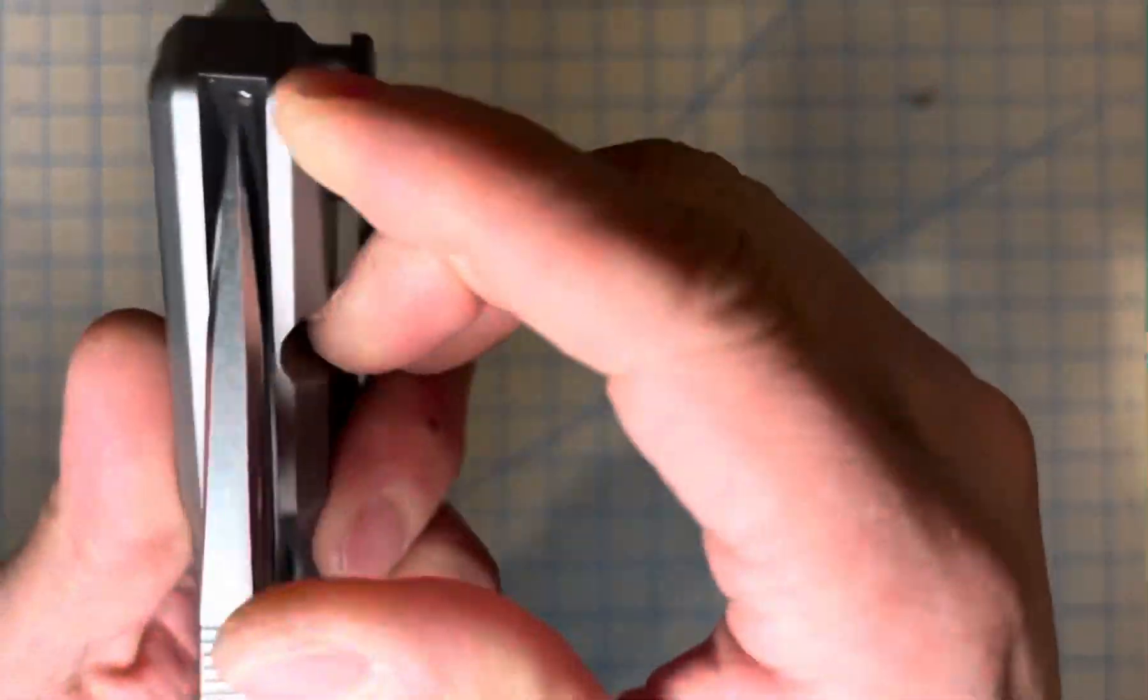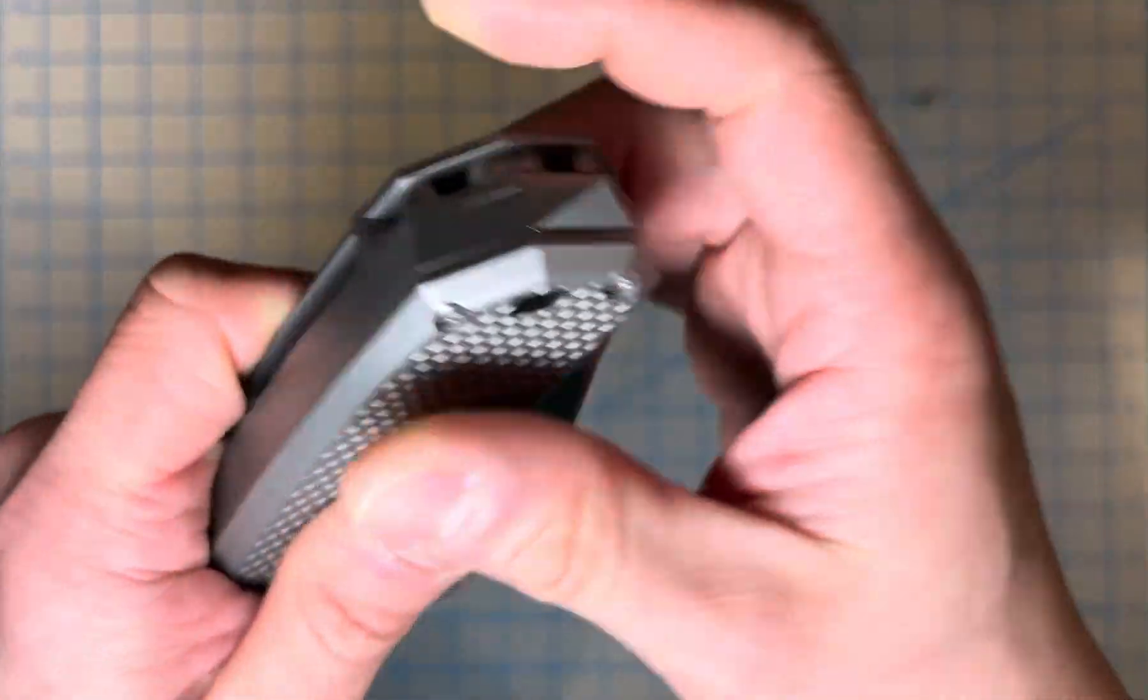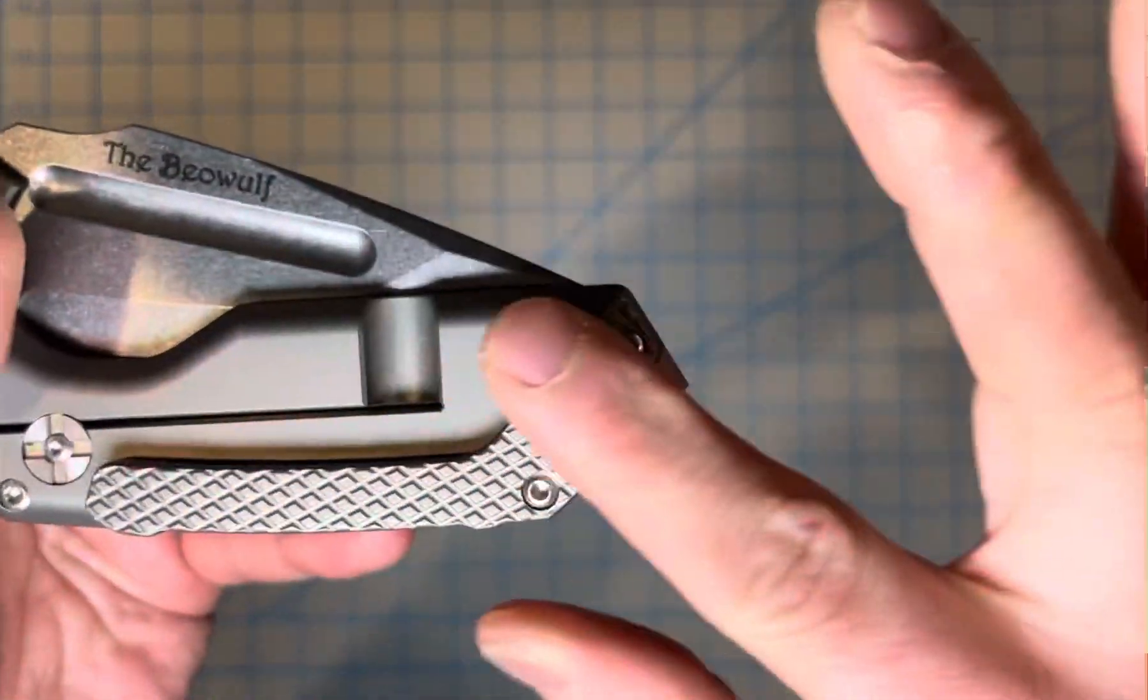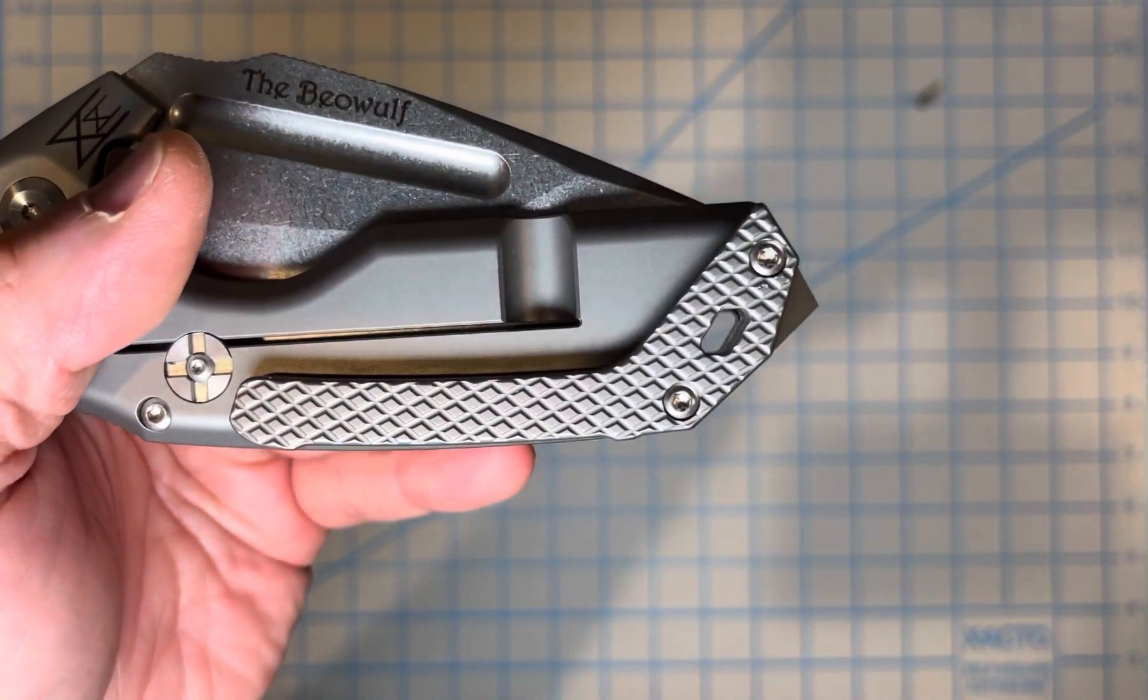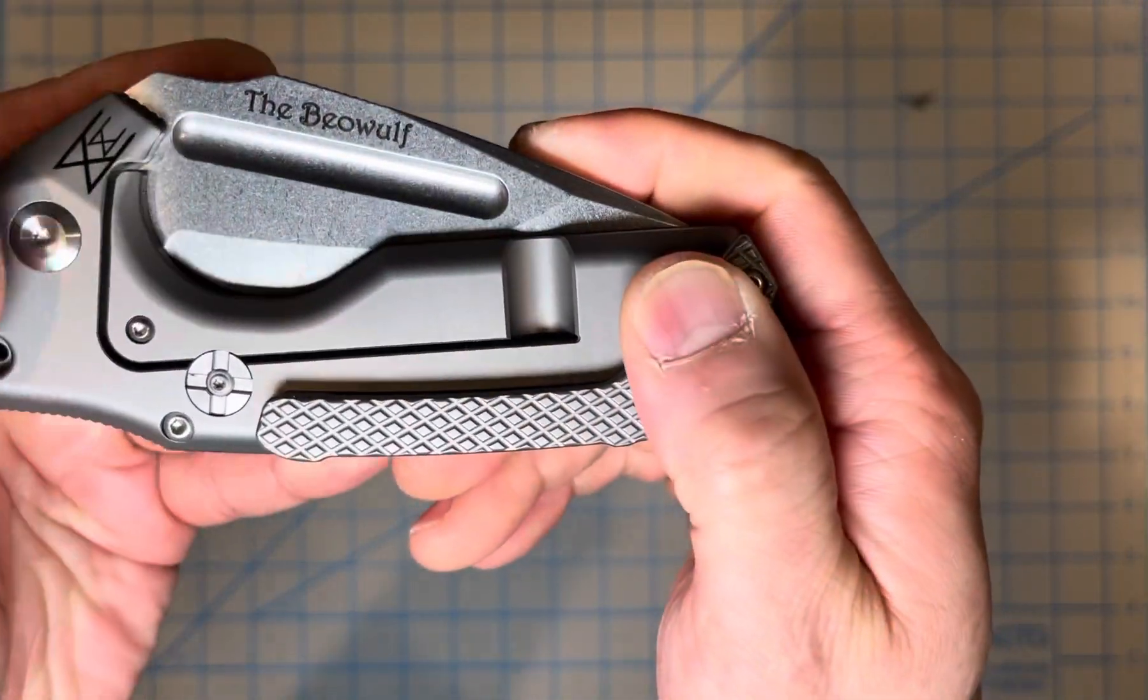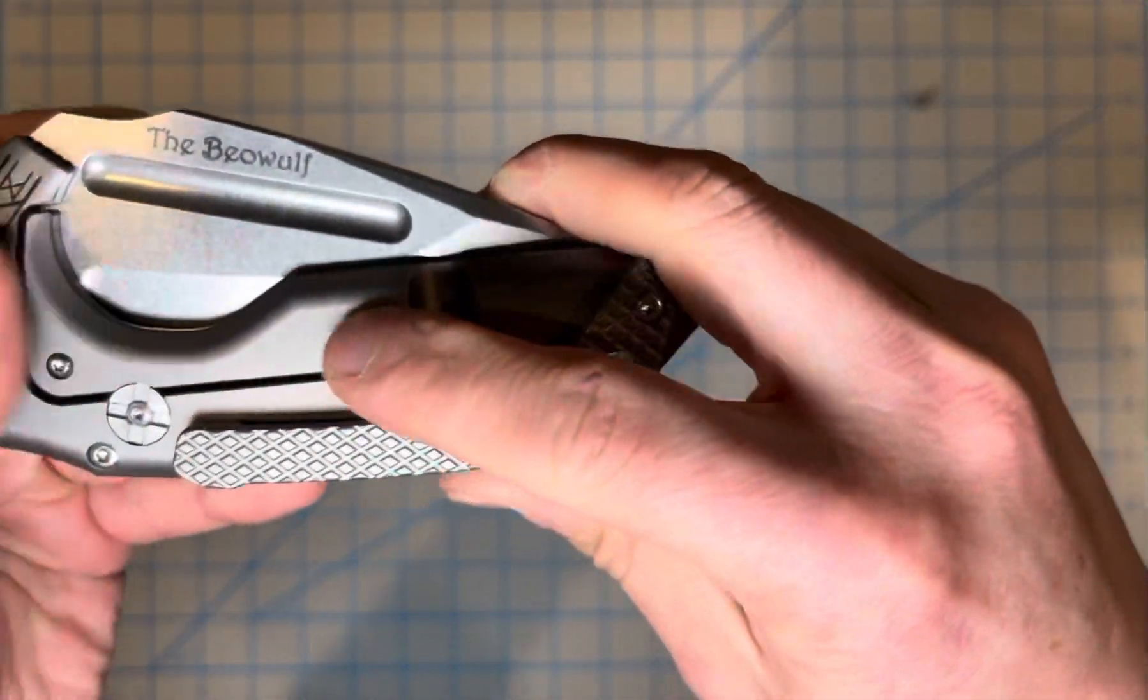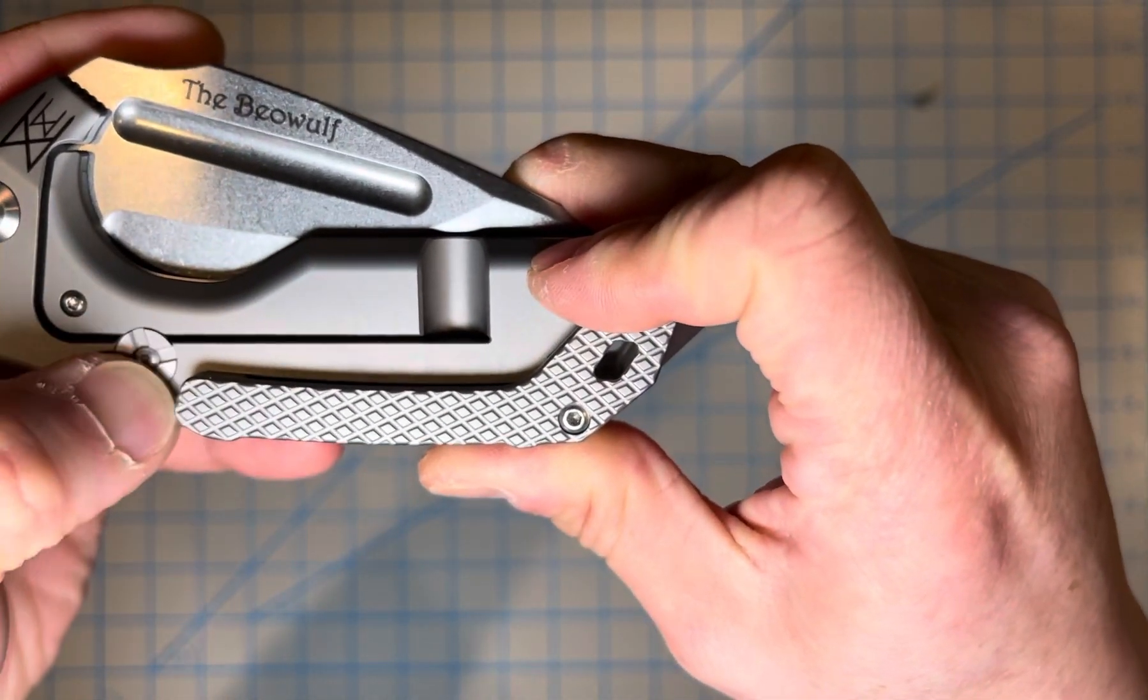It's replaceable because there's a screw underneath here. You can see that right there. You can replace this milled titanium pocket clip. It is not a deep carry as you can see. It has a pattern on here, a diamond pattern, but this part of the lock bar and everything is fine.